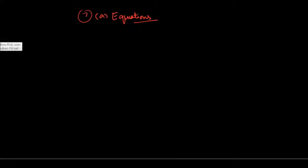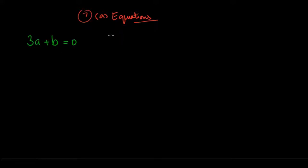Last time we saw expressions like 3a plus b, which we call algebraic expressions. Now if I set this equal to zero, from an expression it becomes an equation. As the word suggests, you are equating something with something. For example, I have 3a plus b on the left side and a different expression like 3a squared b plus 5a squared on the right side — two expressions set equal to each other.